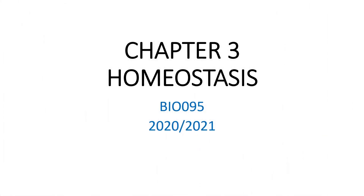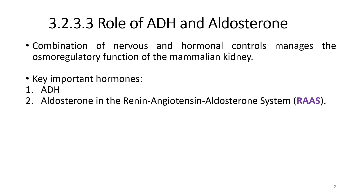Hi and good day everyone. Chapter 3: Homeostasis — role of ADH and aldosterone. A combination of nervous and hormonal controls manage the osmoregulatory function of the mammalian kidney. The two key important hormones for this chapter are ADH and aldosterone in the renin-angiotensin-aldosterone system, referred to as RAAS.